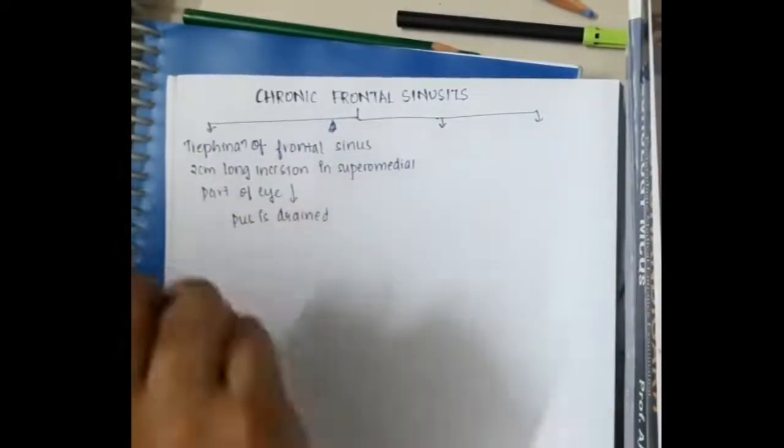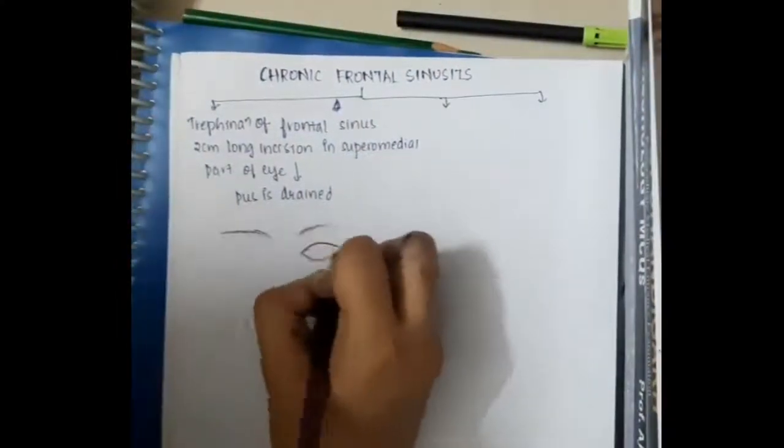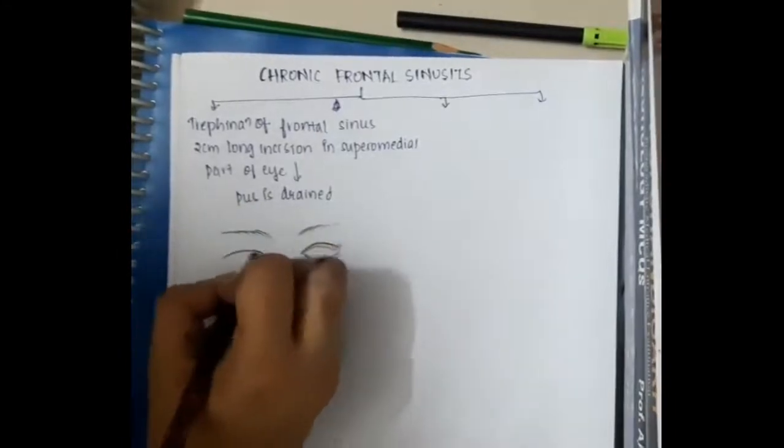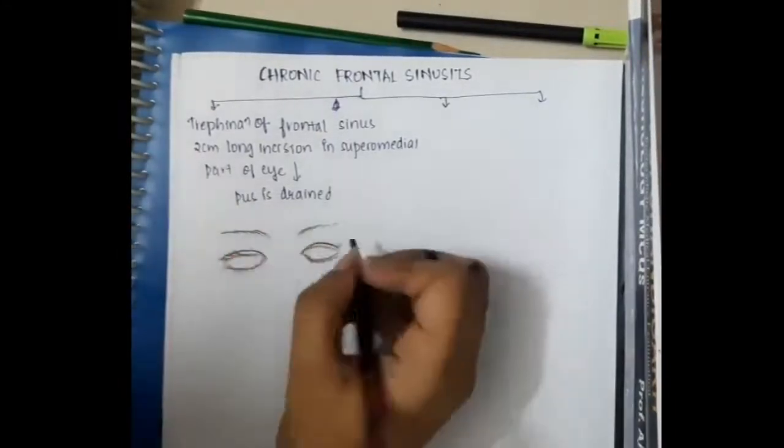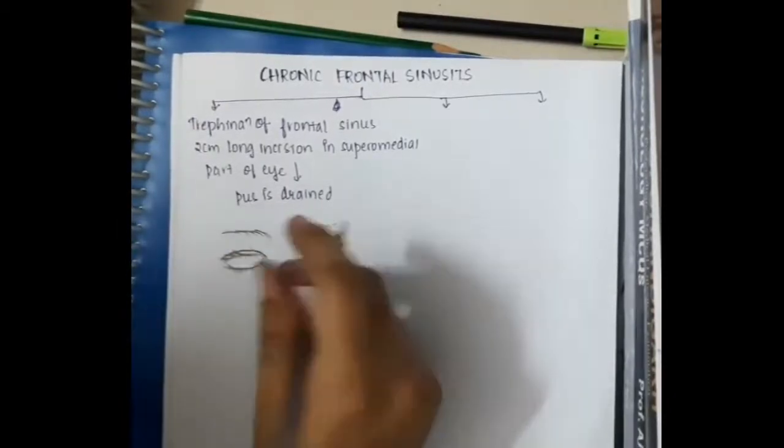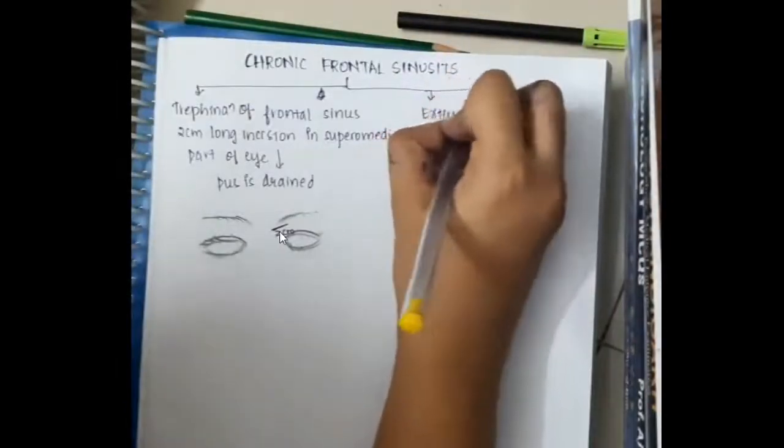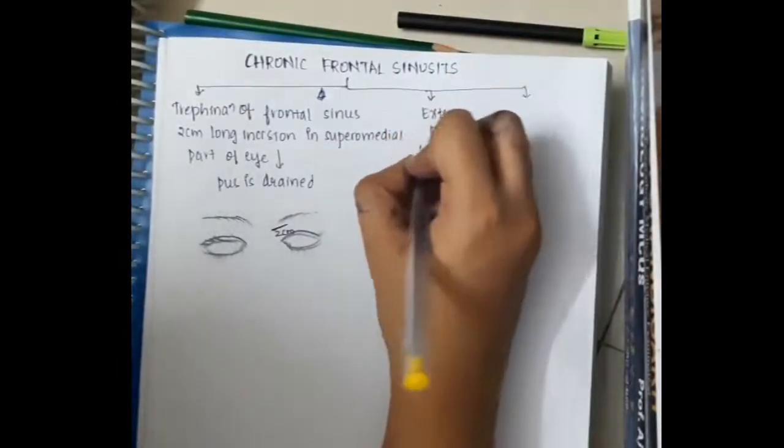So if these are the eyes, then we will make a 2 cm incision in the superior medial part of the eye and we will drain the pus through that.